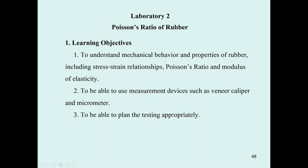By doing this lab, the instructor will provide you with the lumber band and will let you decide the weight that you're going to put into the lumber band. The weight is going to produce the stress, and because the lumber can elongate easily, you can also compute the strain. You will then plot the stress-strain diagram, and from that diagram you can compute the modulus of elasticity. By computing the strain in the lateral direction and strain in the longitudinal direction, you can compute the Poisson ratio.